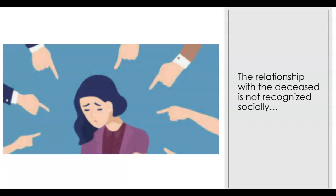There are many factors involved in creating feelings of shame or unwillingness to express grief. When the relationship with the deceased is not recognized socially, this can cause disenfranchised grief. Some examples might be a non-traditional relationship such as an adulterous affair, a secret homosexual relationship, or a heterosexual cohabitation. This might cause shame for the bereaved, causing them to refrain from grieving or expressing grief. Because the relationship felt socially inappropriate, they may not participate in the grieving process, which can lead to prolonged grief and depression.